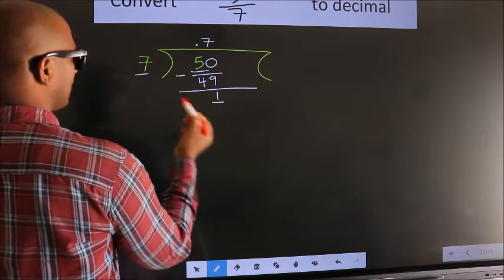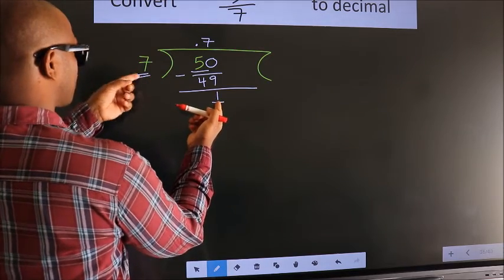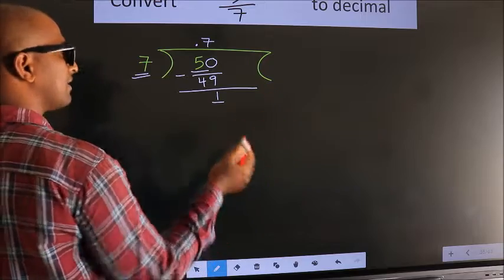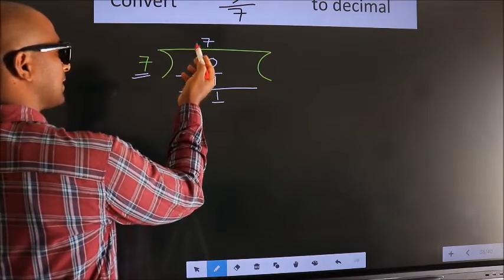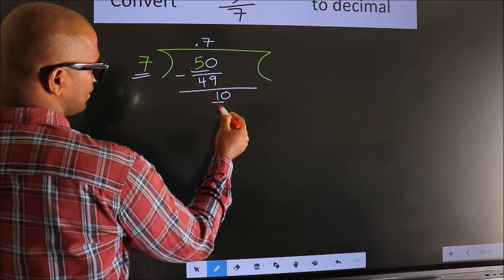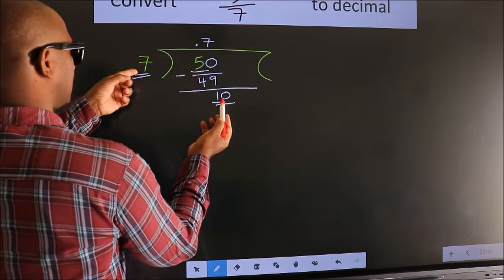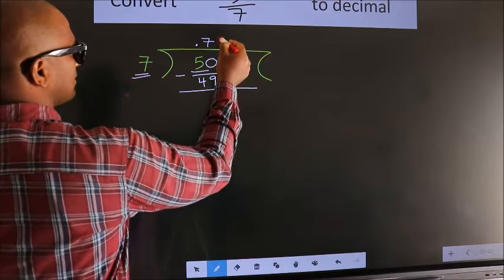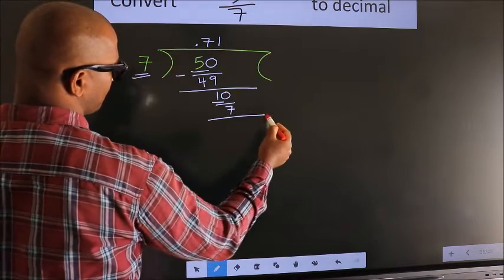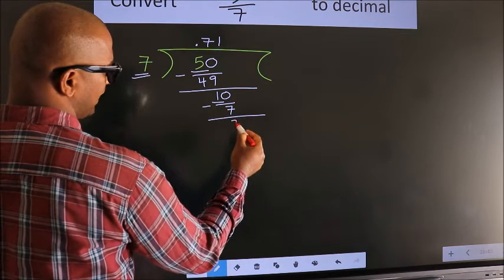Here we have 1, here 7. 1 is smaller than 7. And we already have the decimal, so we can directly take 0. So, 10. A number close to 10 in the 7 times table is 7 ones: 7. Now we subtract. We get 3.